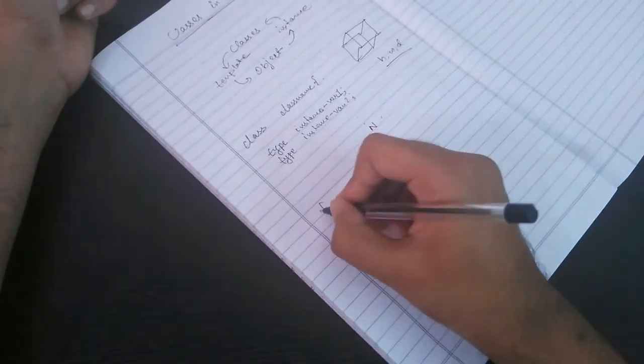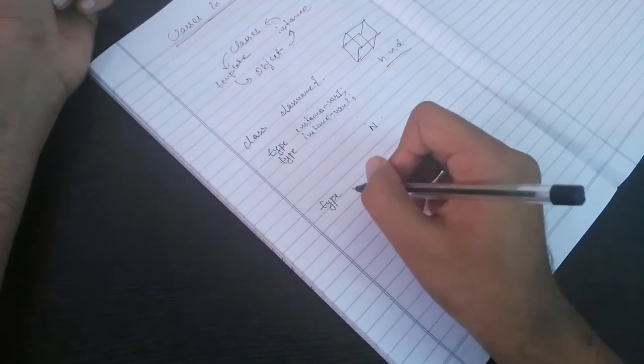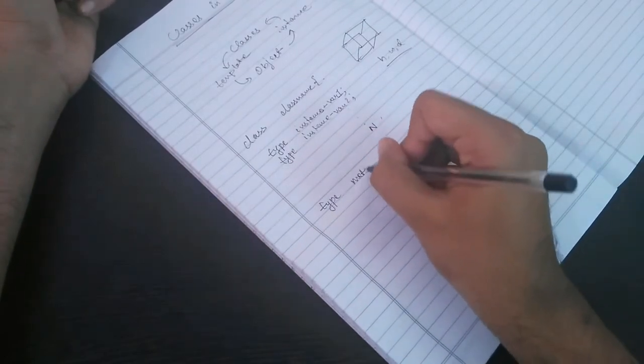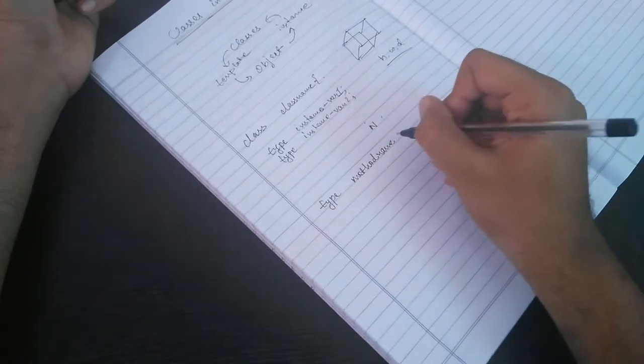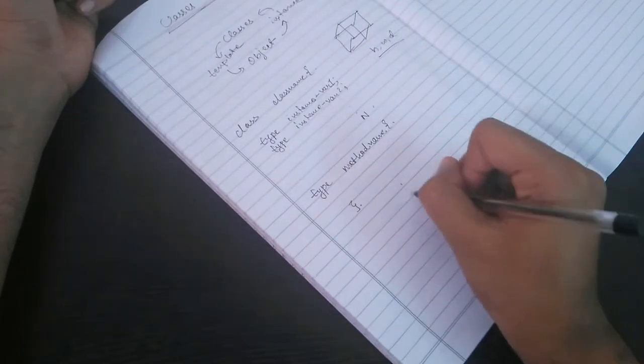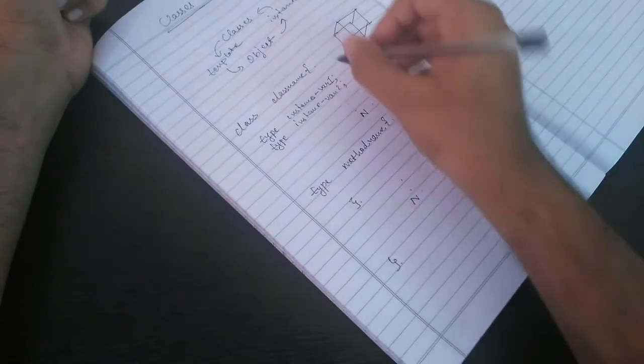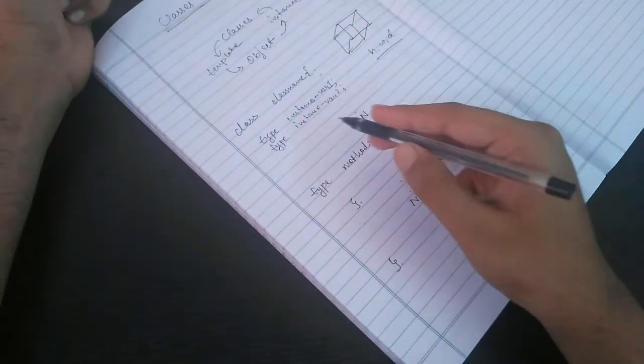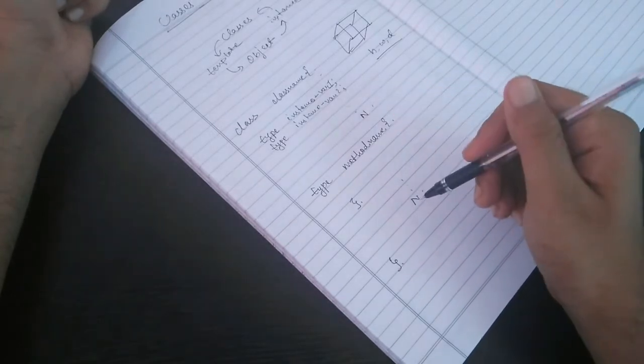And you will have methods. So you will also define the type, the return type, and method name. Similarly, you will define up to n methods, and you will close this brace. This is the basic structure of a class.